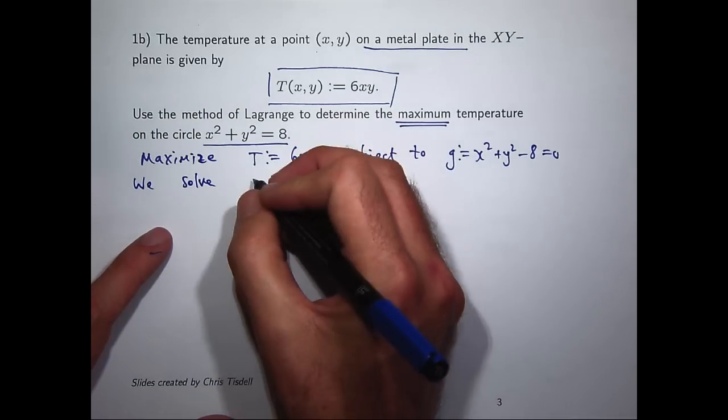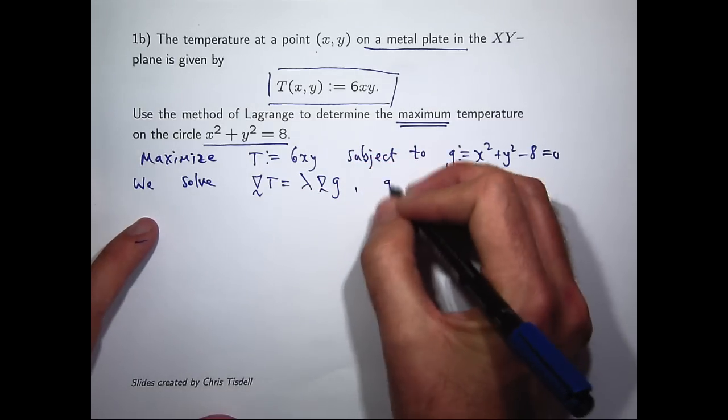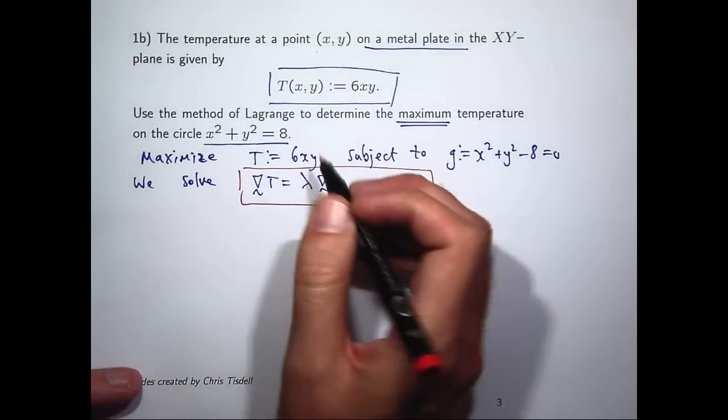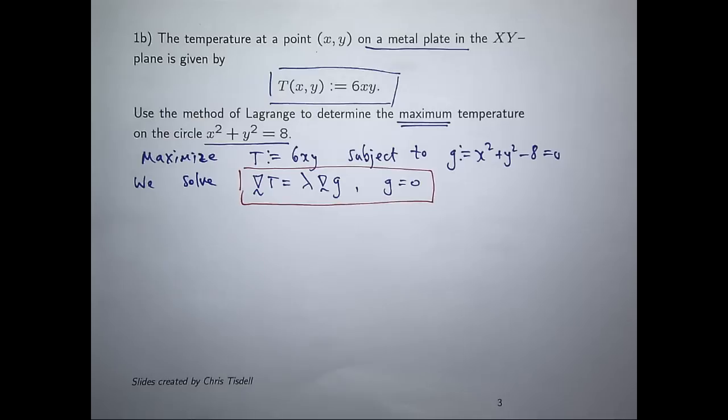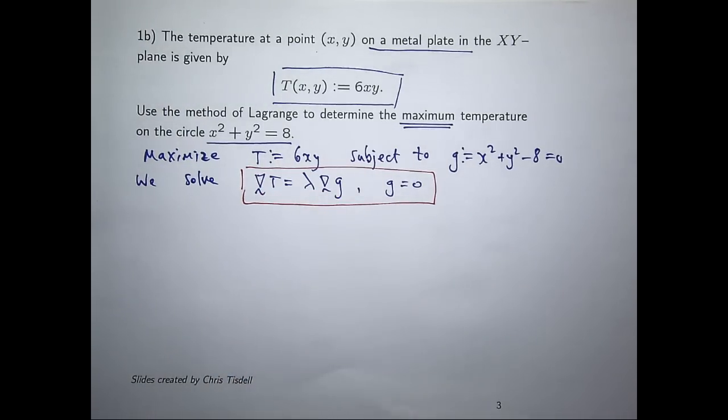To do this we can use Lagrange's approach, which says the following: we solve the system of equations grad T equals lambda grad g. Remember, lambda is a constant known as the Lagrange multiplier. There may be one, there may be more than one. The way that we've looked at these kinds of problems in lectures is to define the Lagrange function and then calculate the critical points. So that's the way I'm going to do it here.